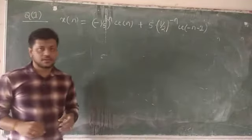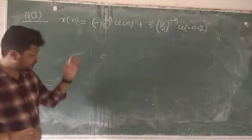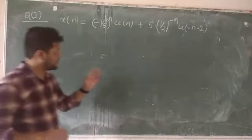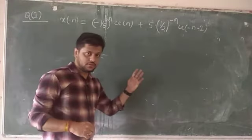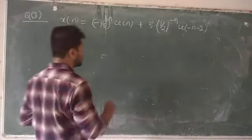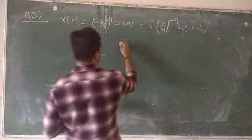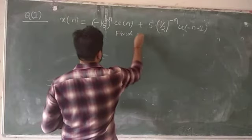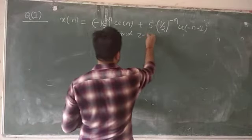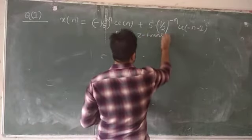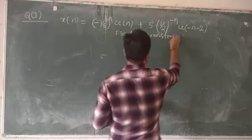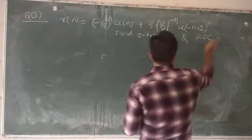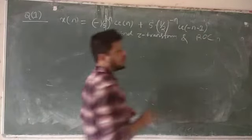The next question: xn = (−1/2)^n·u(n) + 5·(1/2)^(−n)·u(−n−1). Find the Z-transform and region of convergence.